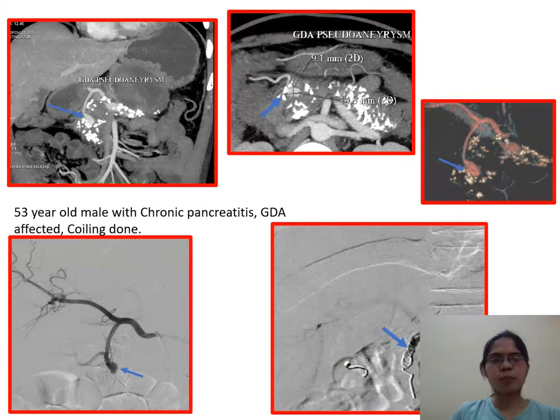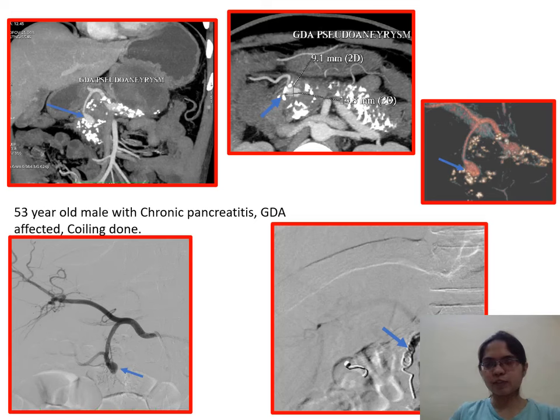Case 2: A 53-year-old male with chronic pancreatitis. The gastroduodenal artery was affected, for which coiling was performed.